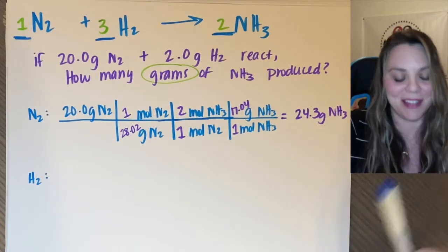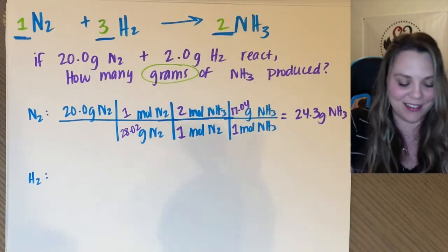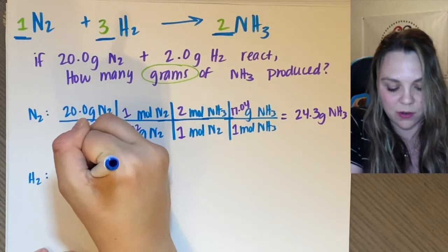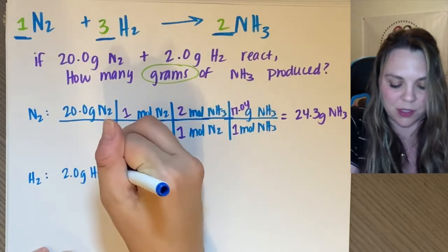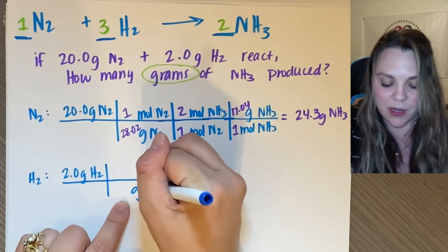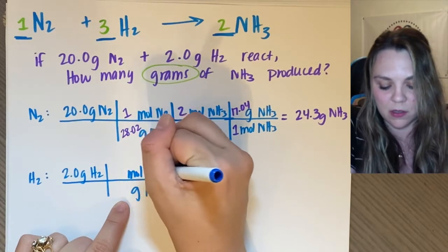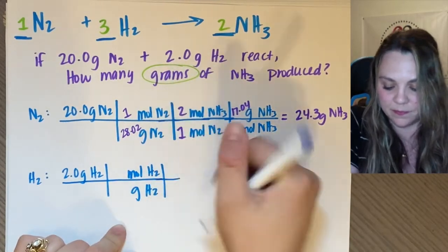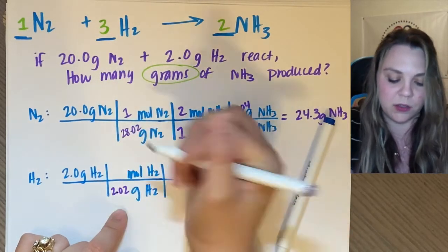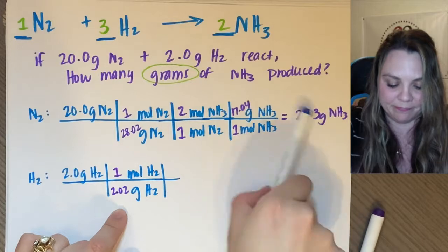Now, I do the exact same thing for hydrogen. So I start with my given of 2 grams of hydrogen. I need to get out of grams of hydrogen, get into moles of hydrogen. Two hydrogens means 2.02 grams for every one mole.